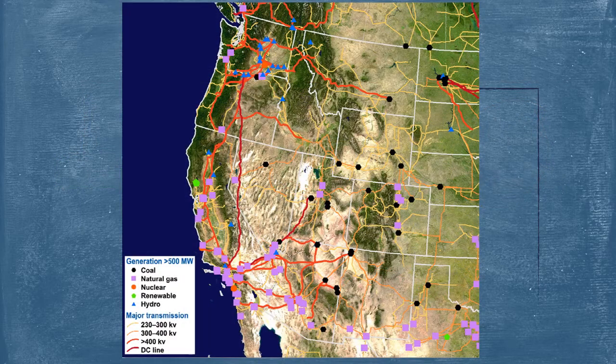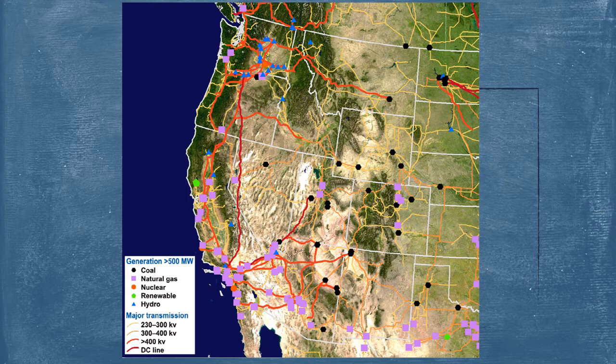Now, going back to that original discussion of that being our distribution system being much more complicated, well, here is an example of that. This is a map of the western seaboard of the United States. The United States is comprised of about four large grids, intertied with DC buses, but we won't go into that.